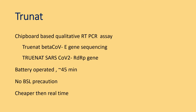TrueNat is a chip-based qualitative RT-PCR assay that uses the E-gene and RNA-dependent RNA polymerase gene as targets. The turnaround time is approximately 45 minutes, it does not require biosafety level precautions, and it is cheaper than real-time assays.